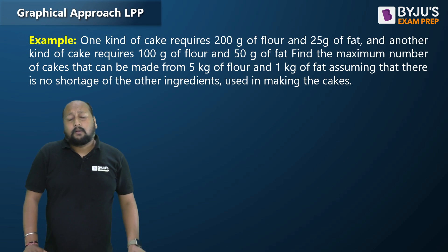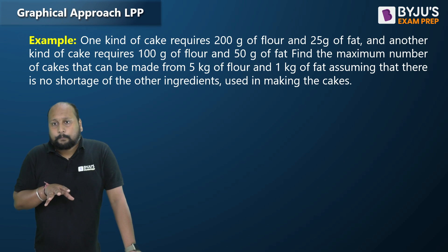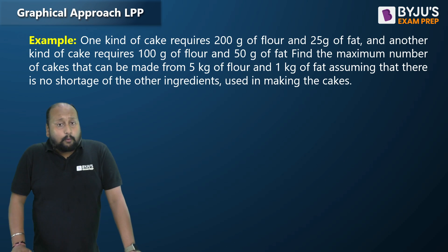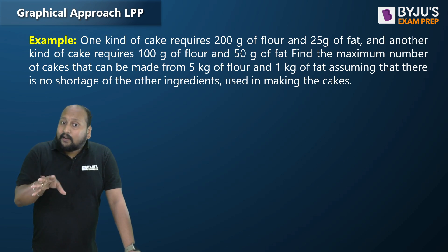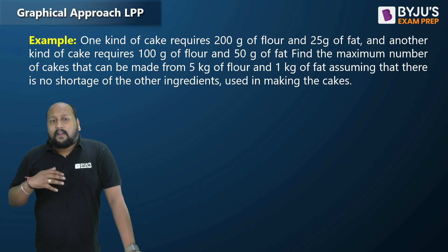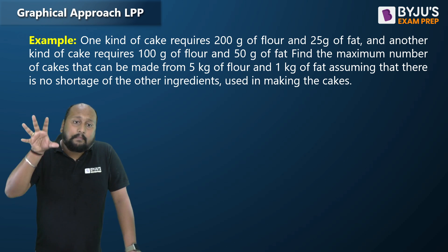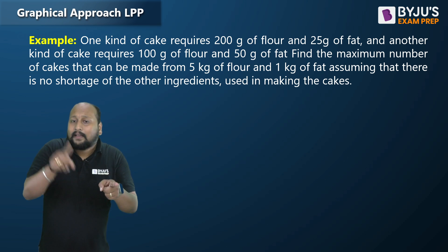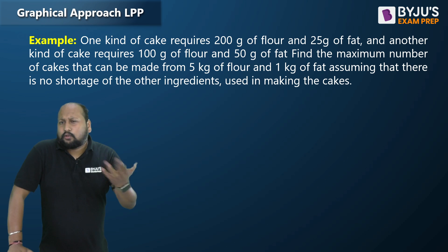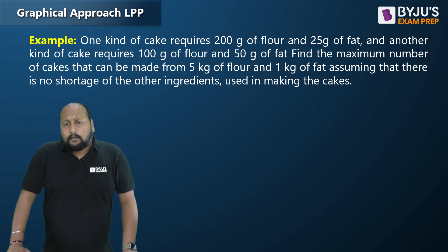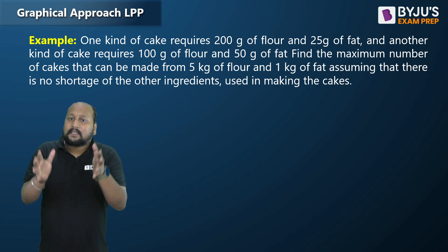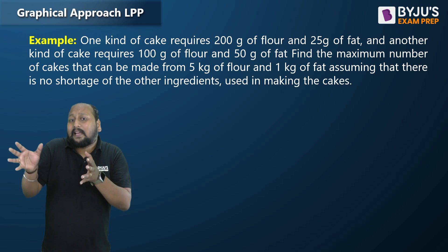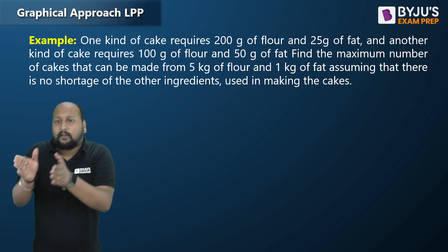Let's take one example using the graphical approach. Suppose one kind of cake requires 200 grams of flour and 25 grams of fat, and another cake requires 100 grams of flour and 50 grams of fat. We have to calculate the maximum number of cakes that can be made from 5 kg of flour and 1 kg of fat, with no shortage of any other ingredients.